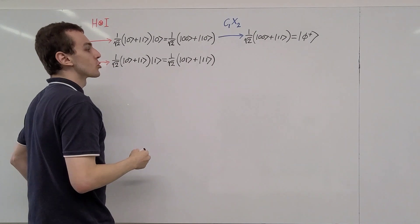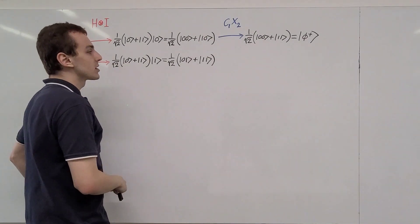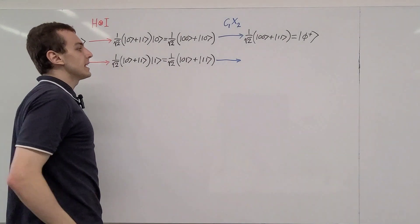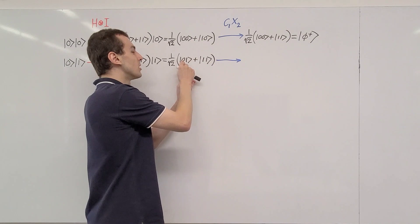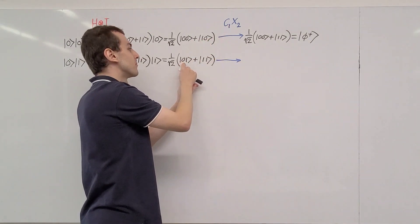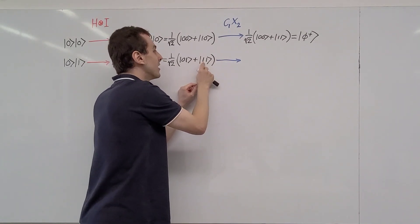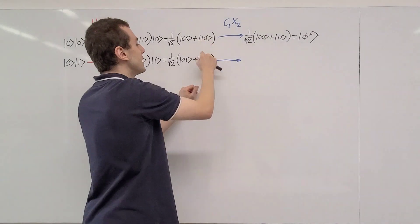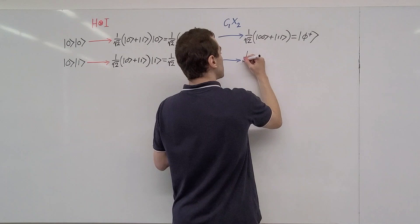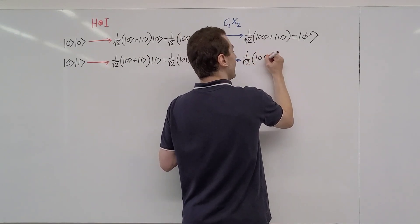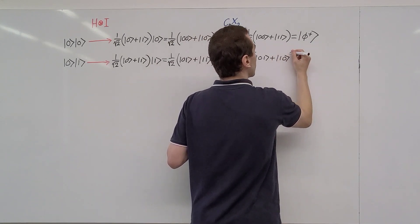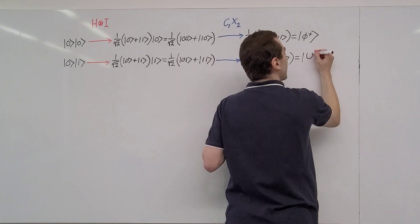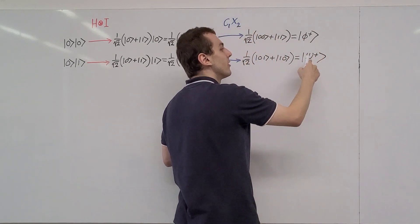Now applying the controlled NOT gate: the |01⟩ state is left alone since the control qubit is zero. But the |11⟩ state, where the first qubit is one, gets flipped — the second qubit flips from one to zero, giving |10⟩. So we get 1/√2 times (|01⟩ + |10⟩). We can write this as ψ+. So here we have φ+ and here we have ψ+, using the Greek letters phi and psi.